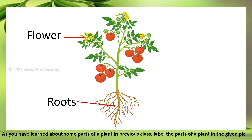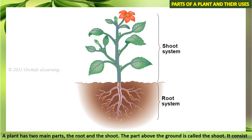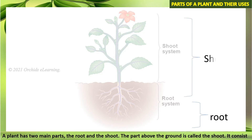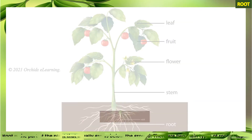Flower, root, stem, leaf. Let us learn more about parts of a plant. A plant has two main parts: the root and the shoot. The part above the ground is called the shoot. It consists of the stems, leaves, buds, flowers, and fruits.